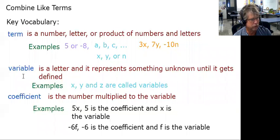Another word you'll come across is the word variable. Variable is a letter and it represents something unknown until it gets defined. So examples of variables would be like X, Y, and Z. They're called variables. And right now, it's an X, Y, and a Z until you tell me what they actually represent.